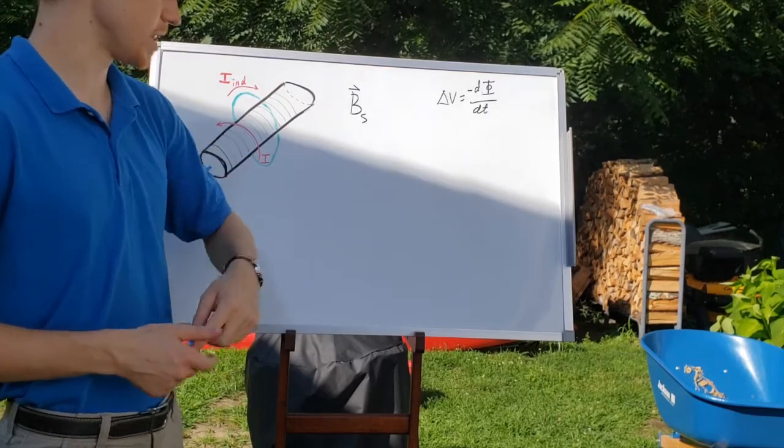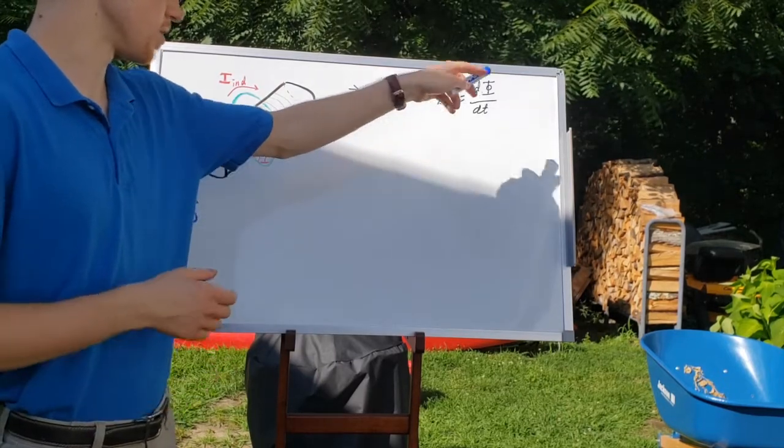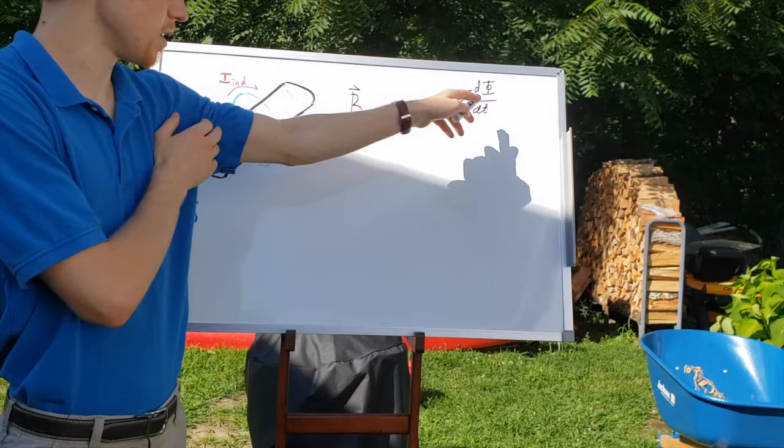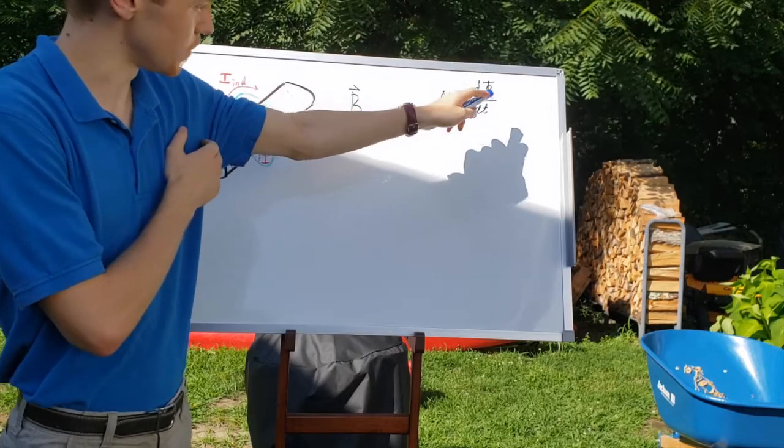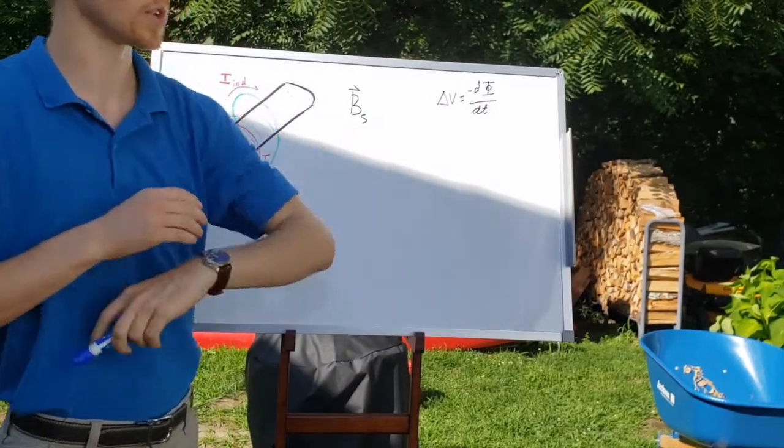And we're also going to need to use Faraday's law, which tells us that the potential difference is equal to negative d flux, which is a change of flux, divided by dt over time.